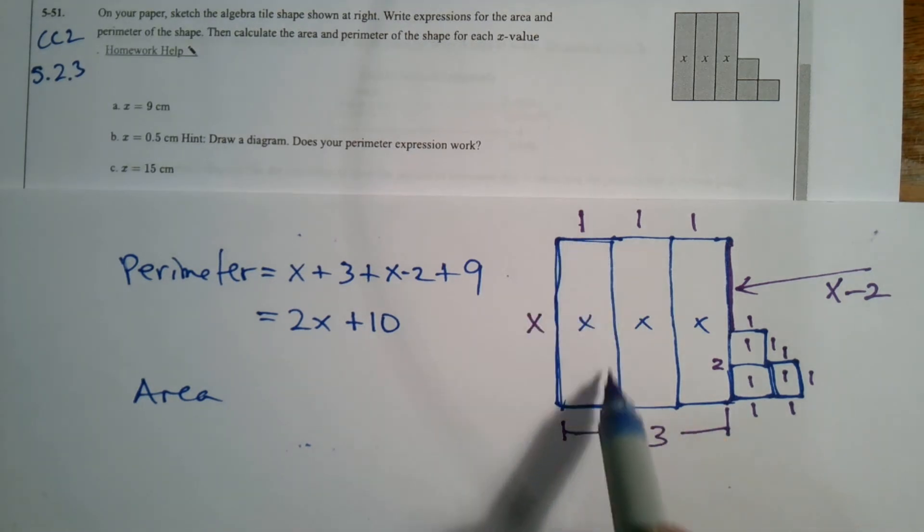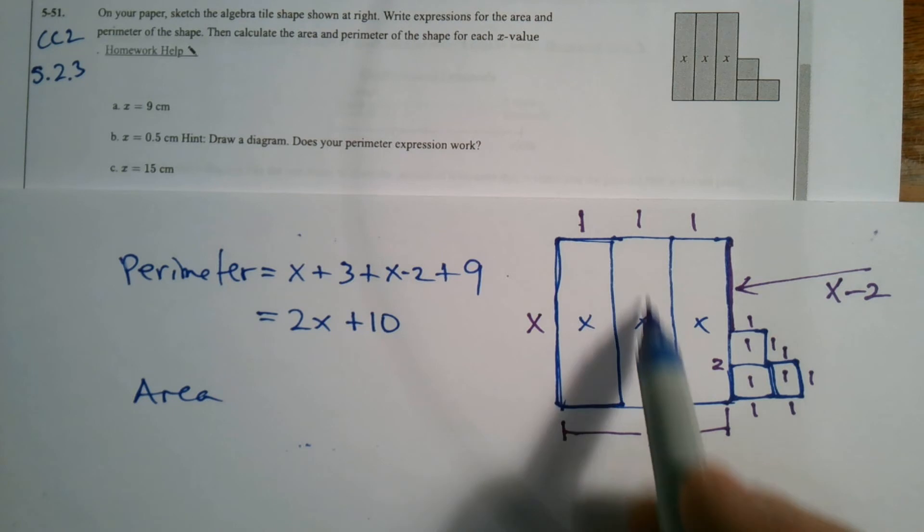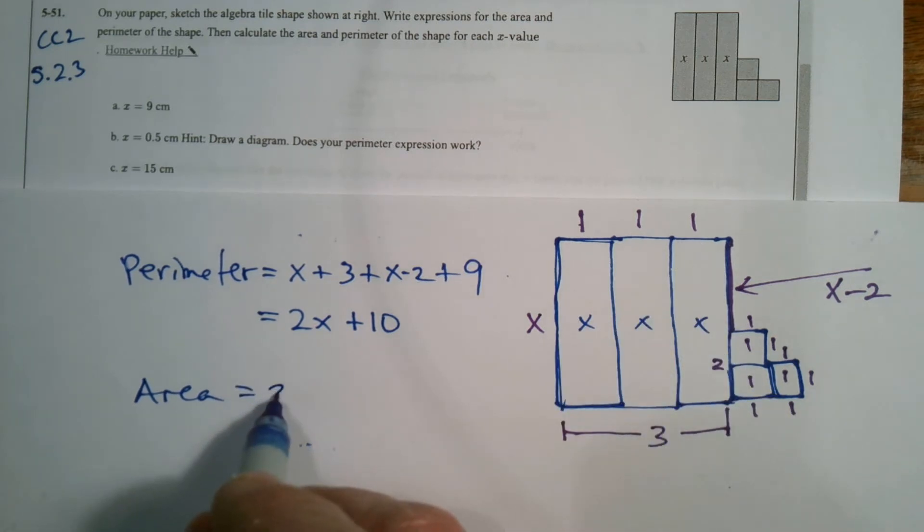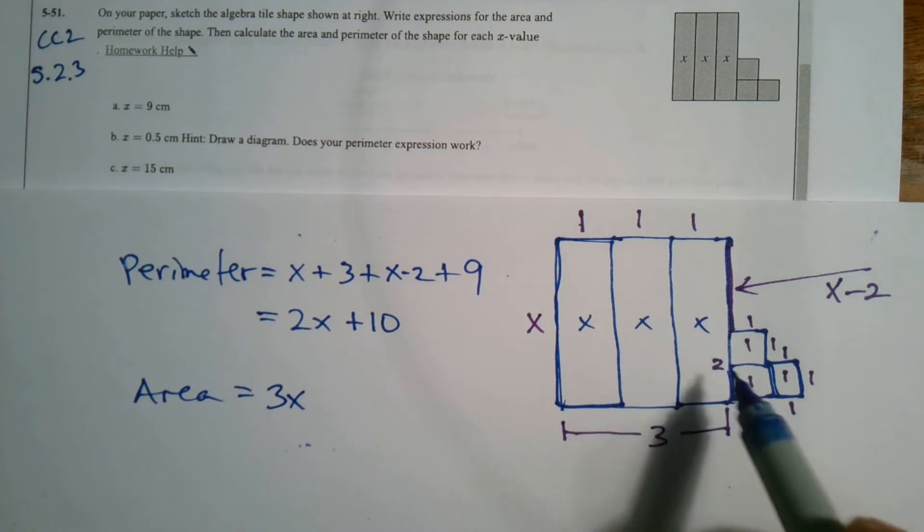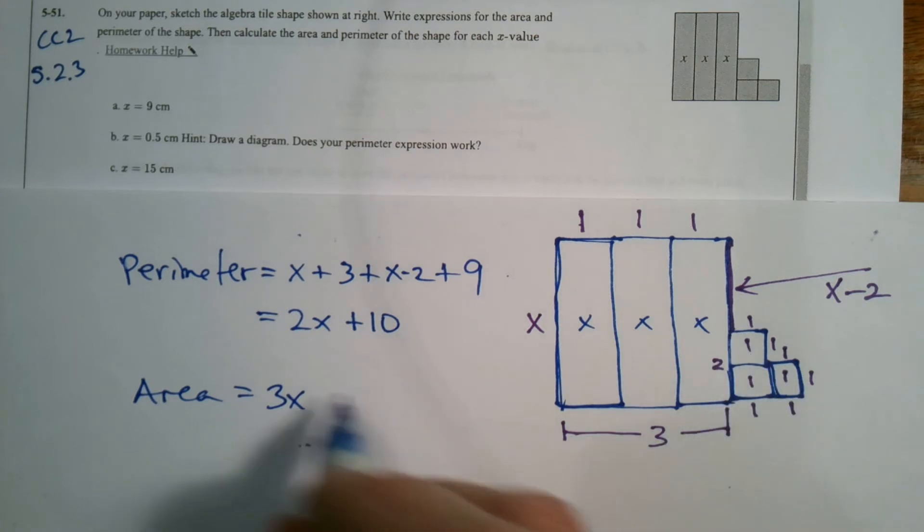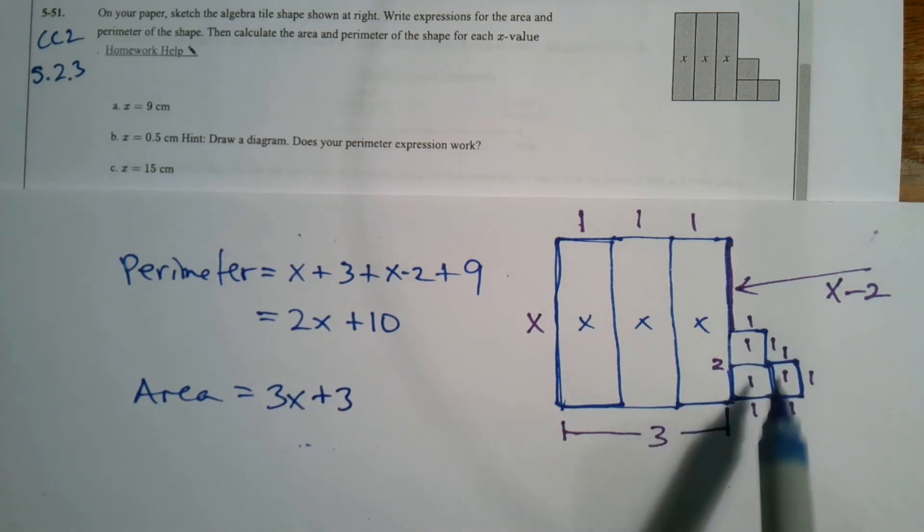So this area is X, one times X is X. The area of this tile is X. The area of that tile is X. So how many X tiles are there? There are three X tiles. And then the unit tiles all have an area of one, right? One by one, area one. So there's one, two, three of those. So the area is 3X plus 3. Really, you name the tiles and count them up.